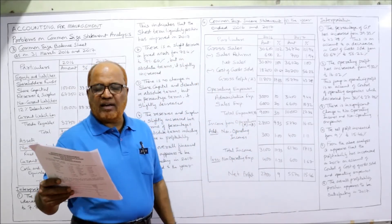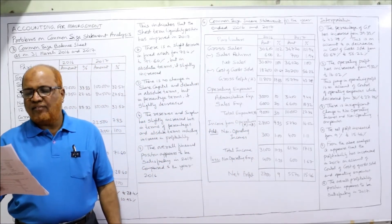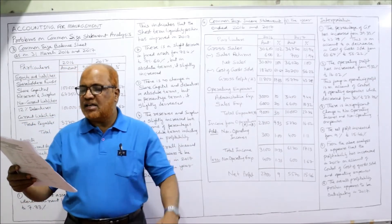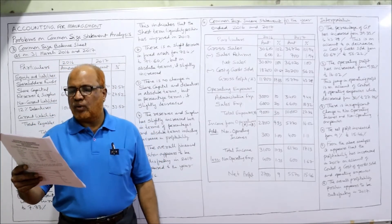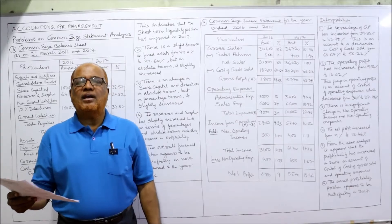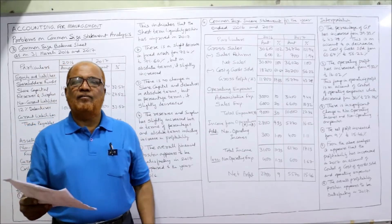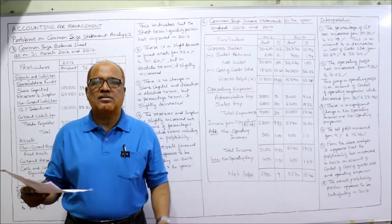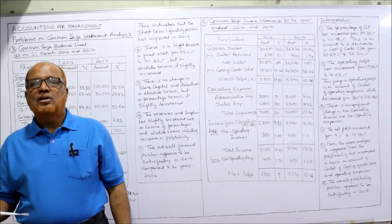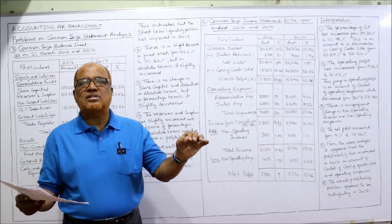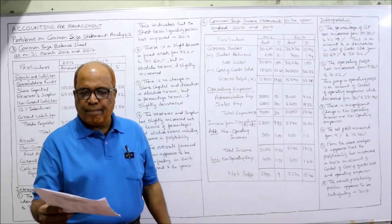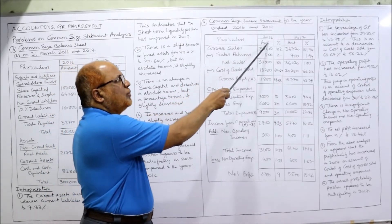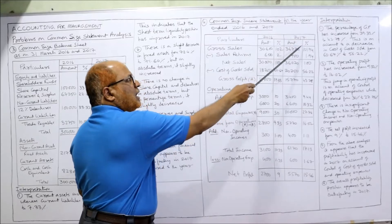Problem number 4: convert the following statement prepared by an analyst into a common size statement and interpret the changes in 2017 in light of conditions of 2016. Again, two years — 2016 and 2017 — are given. Since an income statement is provided, we prepare a common size income statement for both years with two broad columns (2016 and 2017), each having sub-columns for amount and percentage.